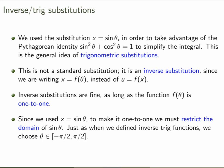The idea is to use a substitution where we set x equal to a trig function — in this case sin θ — in order to take advantage of the identity sin squared plus cos squared equals 1. It's an inverse substitution: instead of writing u as a function of x, we write x as a function of theta. The subtlety is we must ensure the function f(θ) is one-to-one, so we restrict the domain of sin θ to between minus π/2 and π/2, making it invertible, giving us θ equals inverse sin of x.